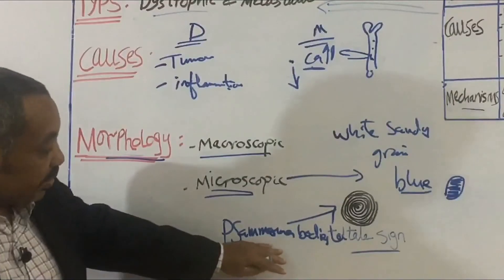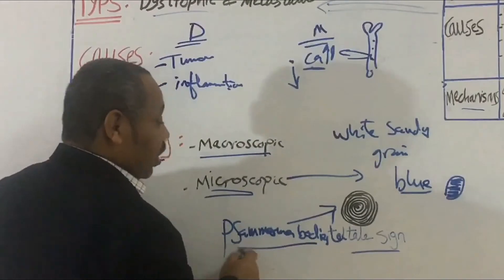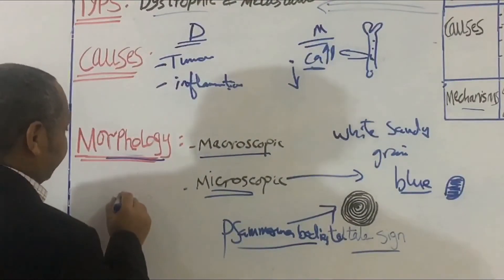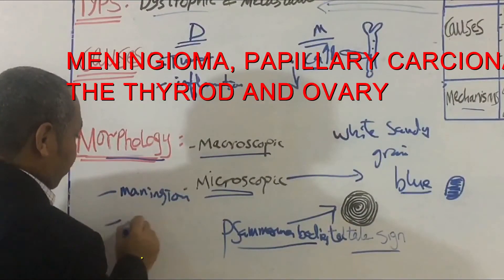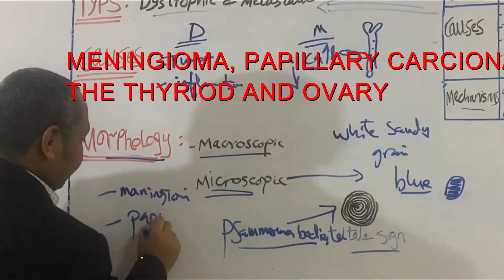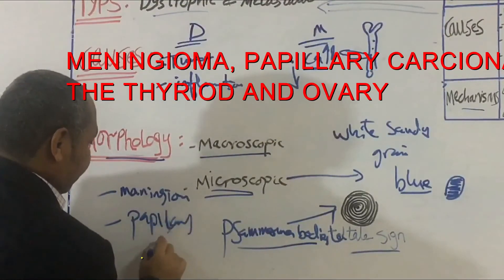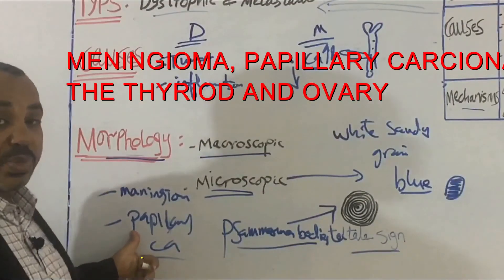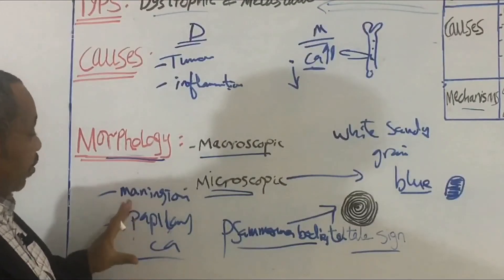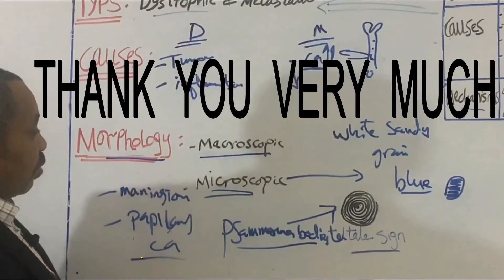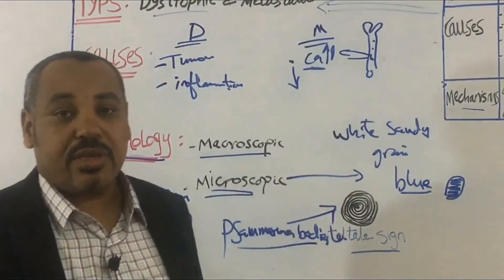Psammoma bodies may be found in meningiomas, or in papillary carcinoma of the thyroid, or papillary carcinoma of the ovaries. These are the most important points about this topic. Thank you very much for watching.